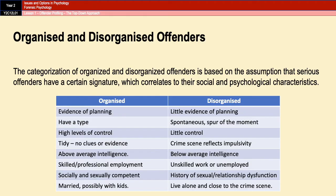The idea of organised and disorganised offenders is based on the concept that serious offenders have a certain signature way of working, and that these signatures generally correlate with a particular set of social and psychological characteristics. The characteristics of organised and disorganised offenders are contrasted in a table, and they are pretty much the direct opposite of one another. An organised offender tends to plan quite meticulously and shows high levels of control, leaving very few clues or evidence. A disorganised offender is the exact opposite — very spontaneous, impulsive, with no victim type, leaving DNA and evidence behind, and bodies often still at the crime scene.